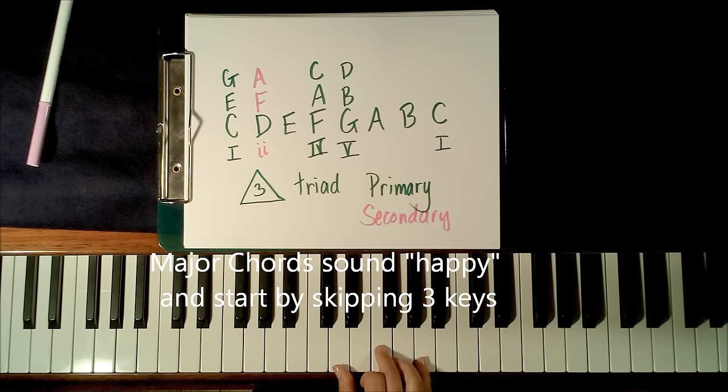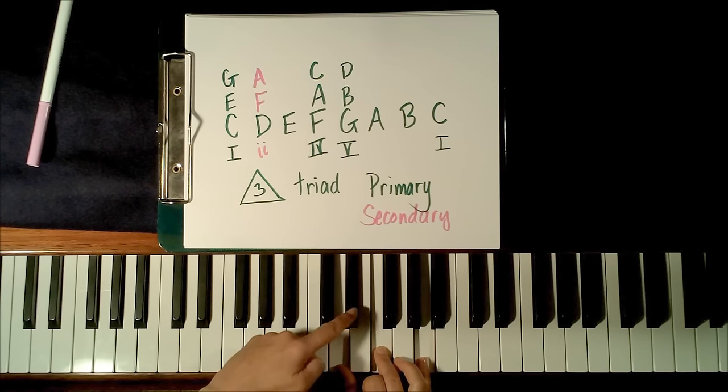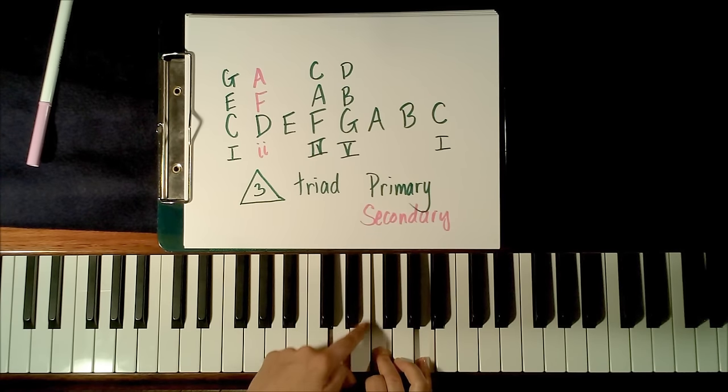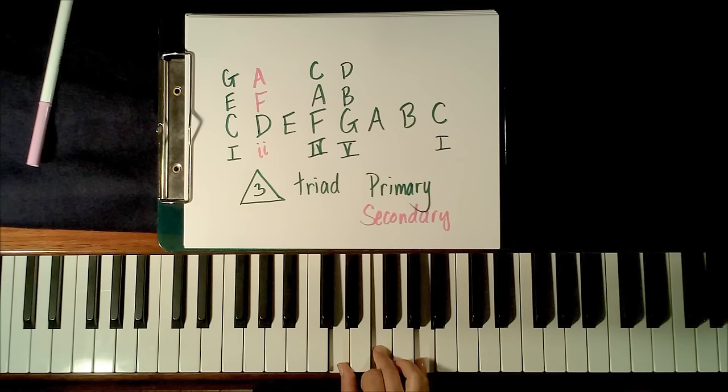So when I move to D now, I'm still playing all white keys, but what you notice is that there's only two keys skipped here, because there's no black key after E. So this gives us a different arrangement of the tones, and it gives a minor sound.